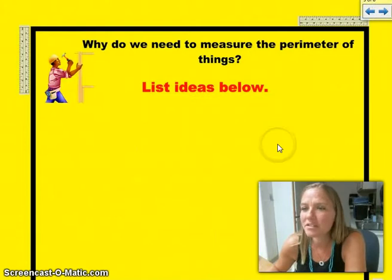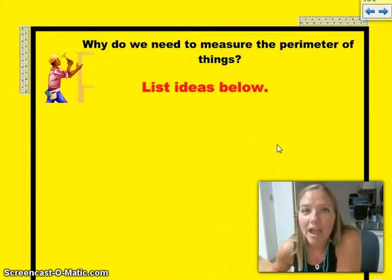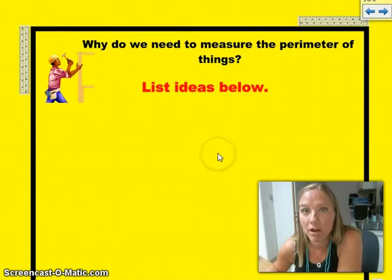Why do we need things to measure the perimeter of things? This is where I want you to take out your notebook and I want you to write down at least five things or five ideas of why we need perimeter or how we use it. Go ahead and write those down. I'll give you a little bit of time.